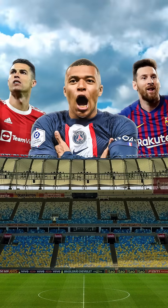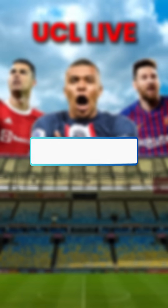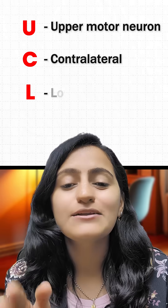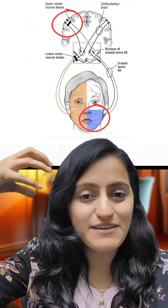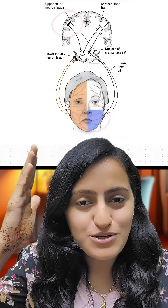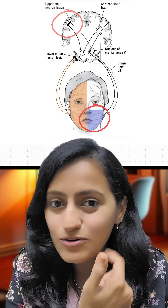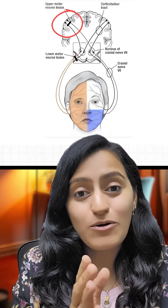So what does UCL stand for? U for Upper motor neuron, C for Contralateral, L for Lower half. So if there is a right facial nerve upper motor neuron lesion, it's going to be the left lower quarter — or half — that's going to be affected.